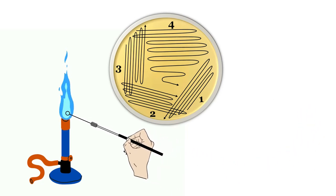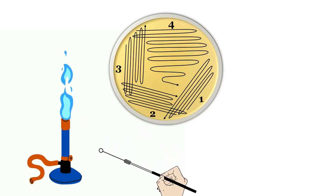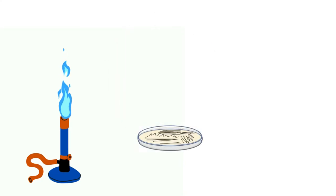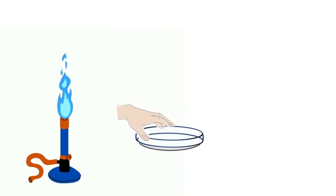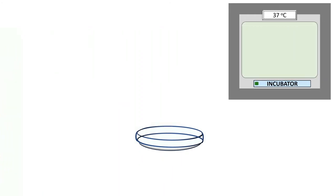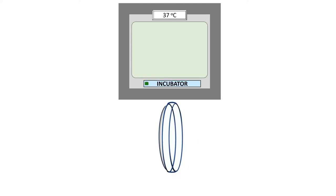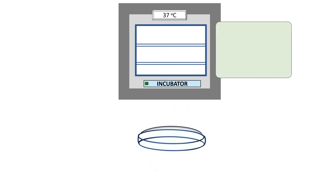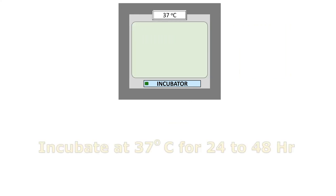Finally heat the wire loop and keep it aside. Now close the lid of the petri plate. Invert the plate and keep the petri plate in incubator at 37 degree Celsius for 24 to 48 hours for incubation.